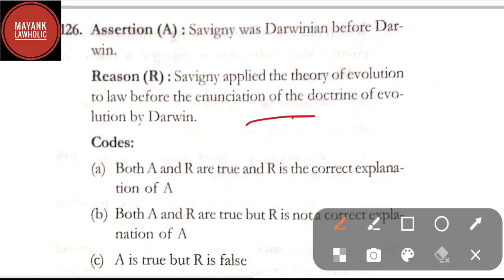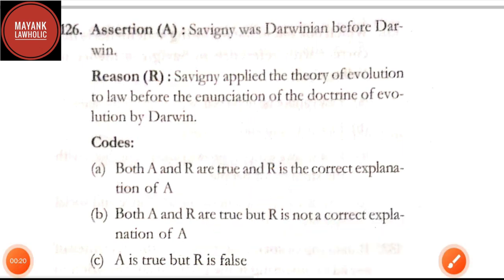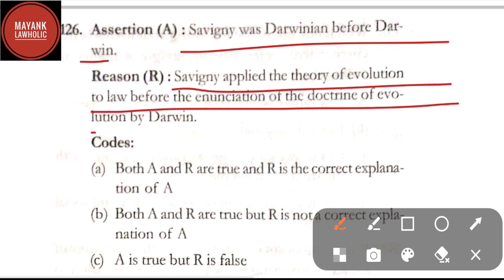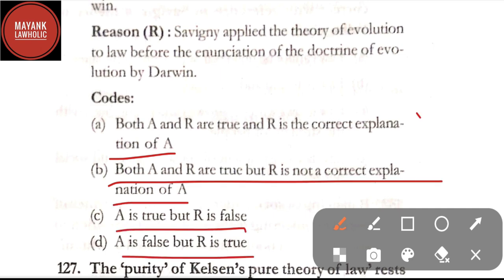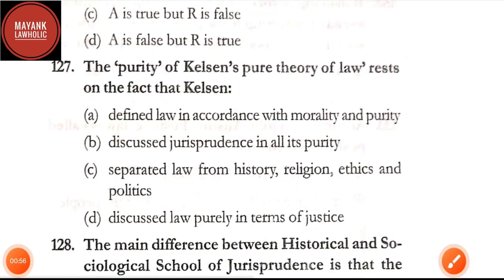Hello everyone, welcome back to Mayank Lawholic — this is the sixth video in the series. Question number 126: assertion — Savigny was Darwinian before Darwin; reason — Savigny applied the theory of evolution to law before the enunciation of the doctrine of evolution by Darwin. Options: A — both A and R are true and R is the correct explanation of A; B — both A and R are true but R is not correct explanation; C — A is true but R is false; D — A is false but R is true. The correct answer is option A.